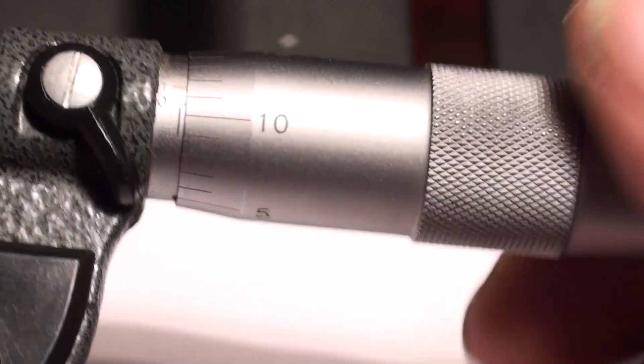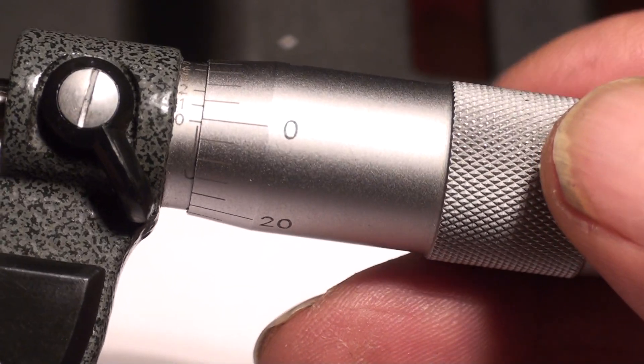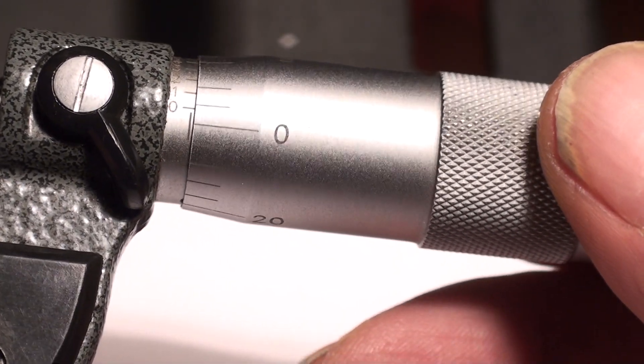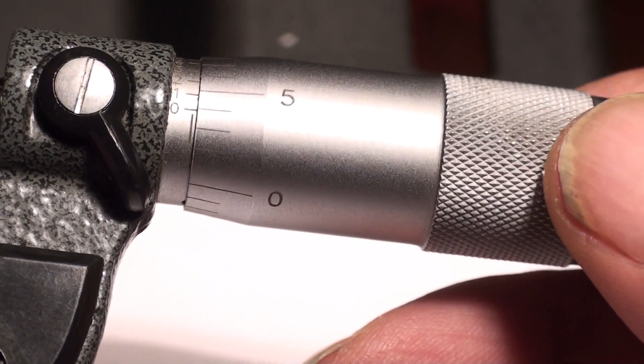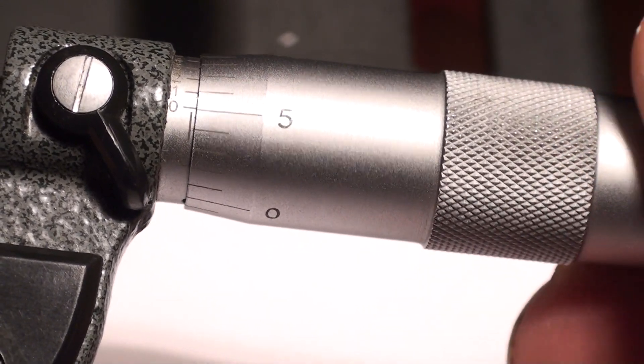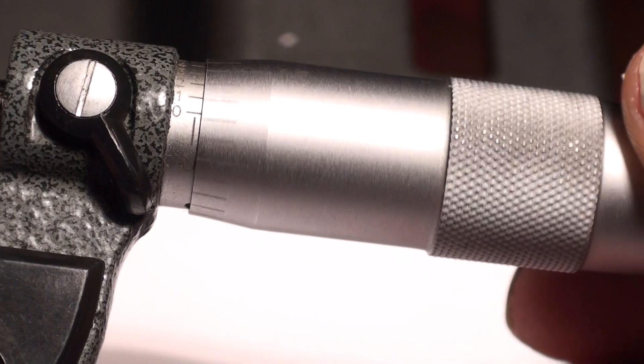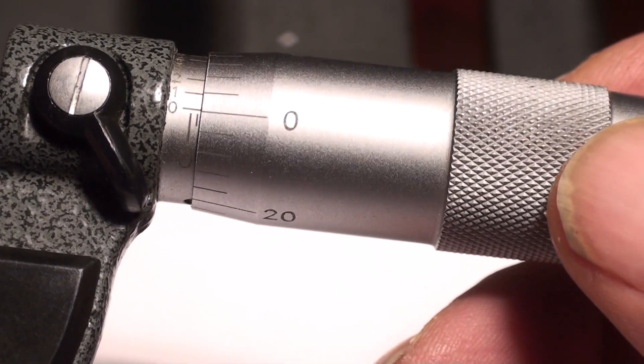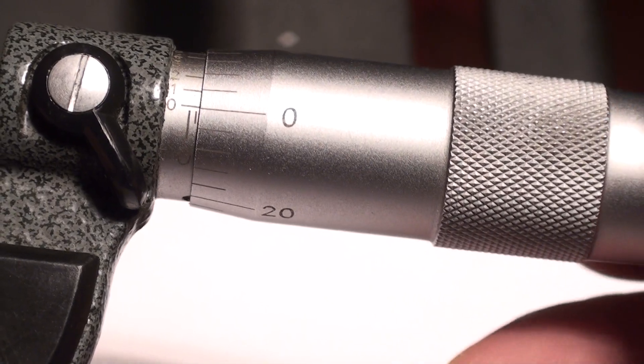This particular micrometer, you just count. That's one thou, two thou, three thou, four thou, five thou, ten thou, fifteen, twenty, twenty-five thou. We're at the first line.